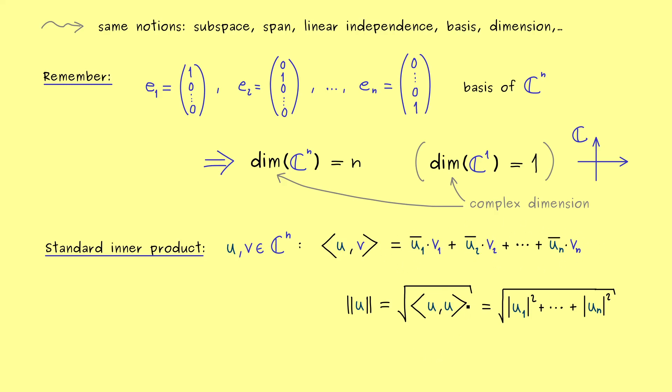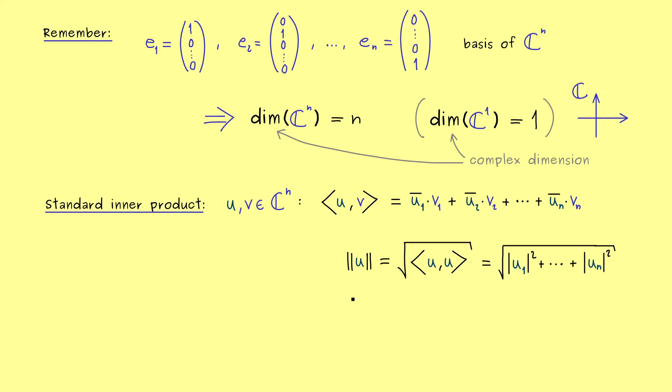Otherwise we would have a problem defining a well defined length. And in the case of C^n this length here is what we call the standard norm of the vector u. And maybe for that we should give a quick example.